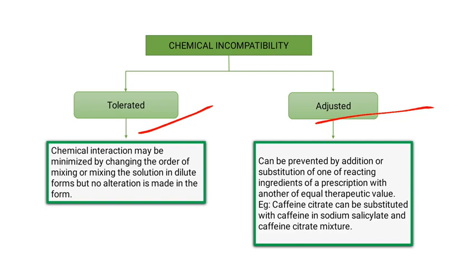The chemical incompatibility can be avoided or minimized by changing the order of mixing of ingredients, or by converting them into dilute form — that is, avoiding mixing in concentrated form. We can use the dilute form of solution, but no other ingredients or additives can be substituted.